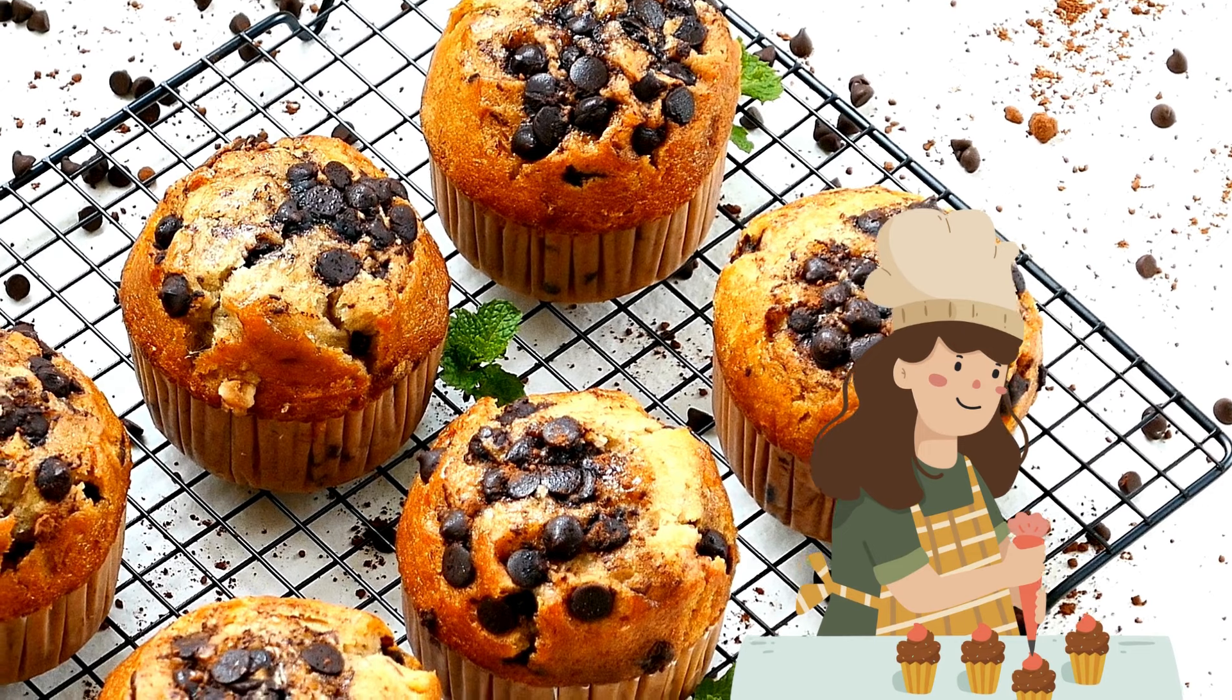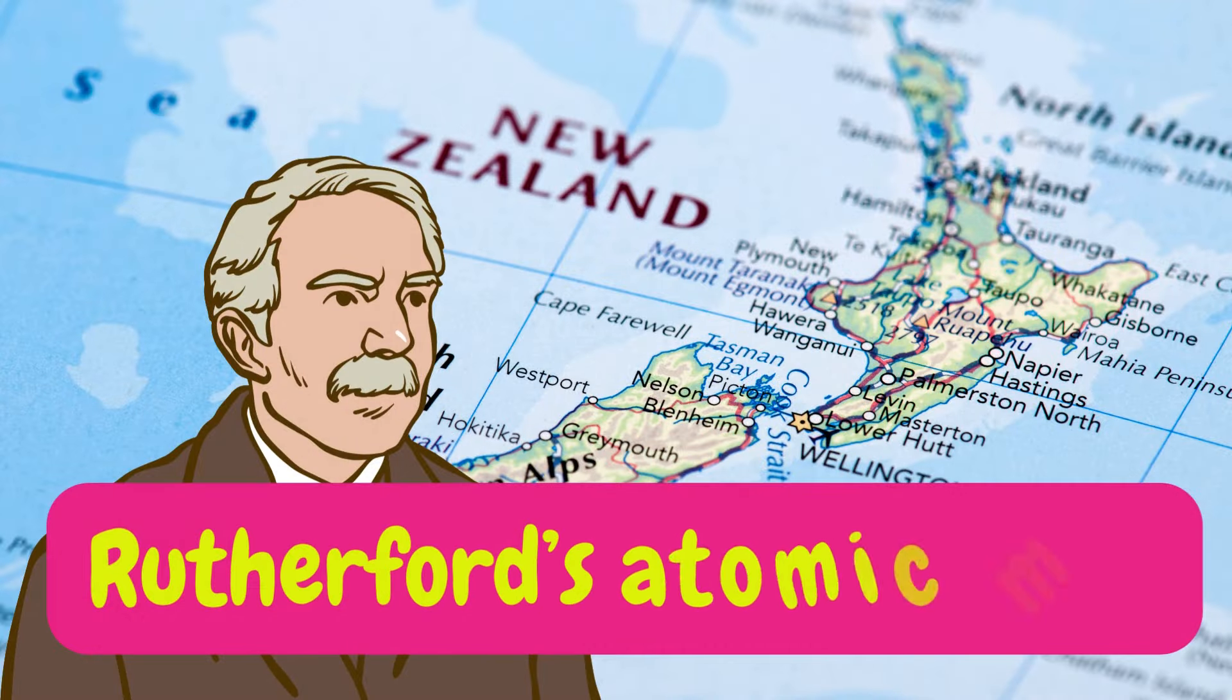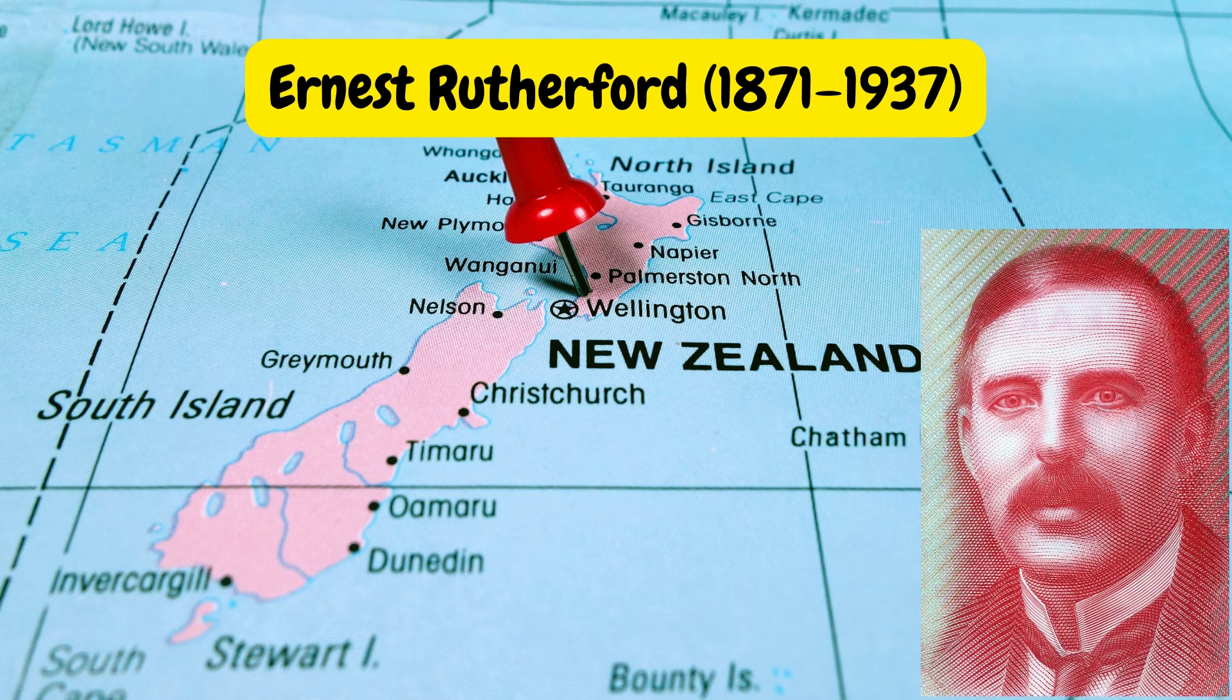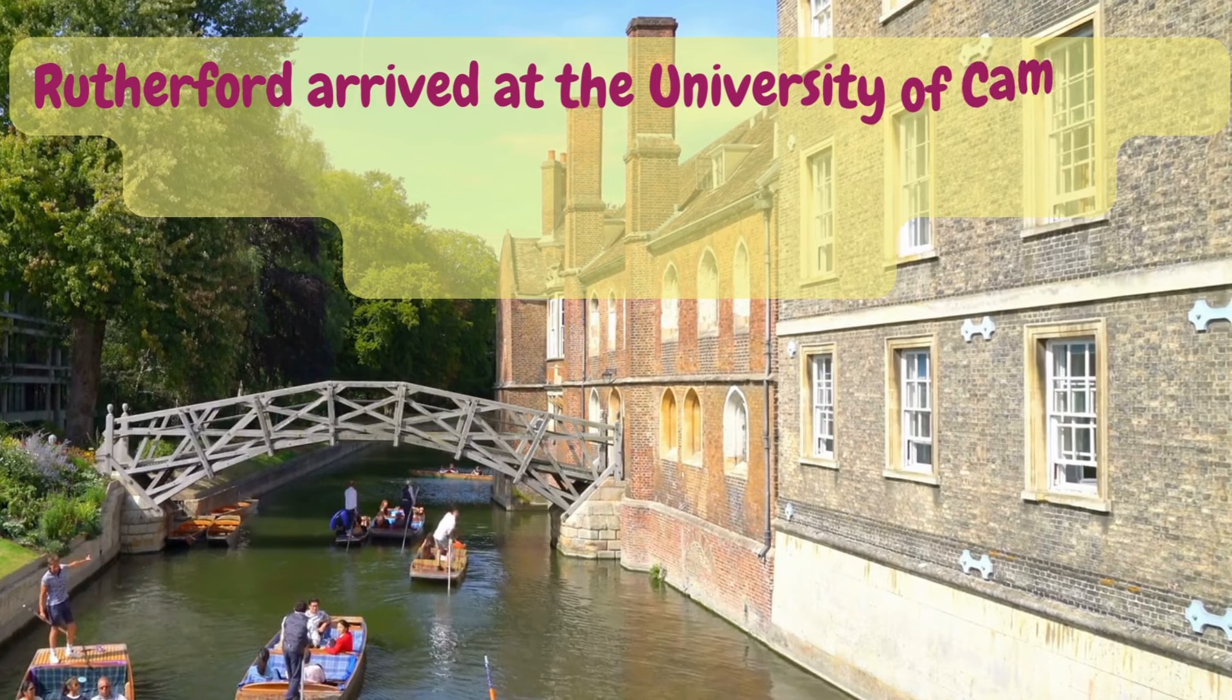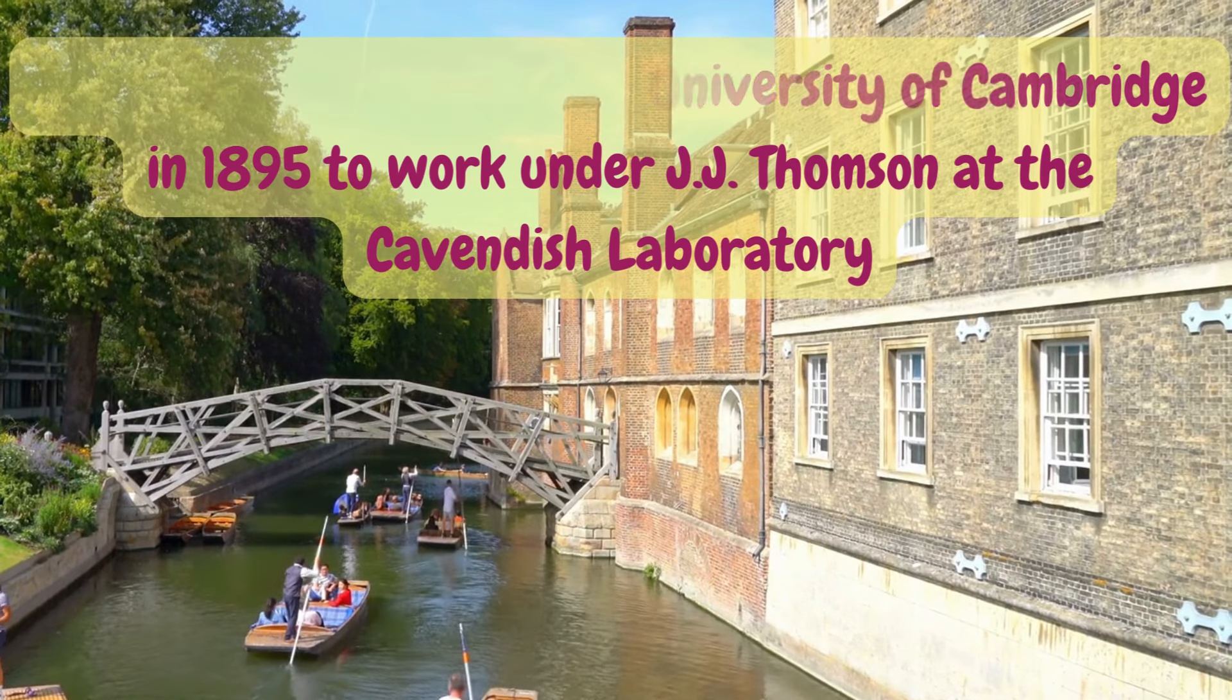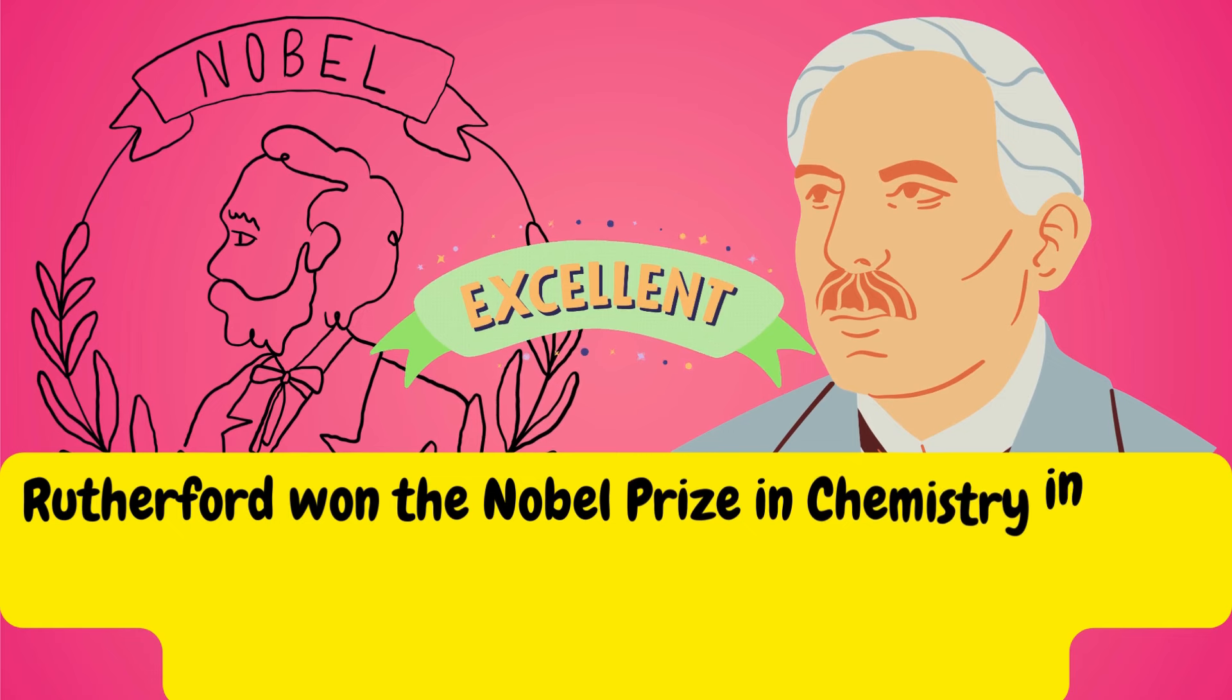Rutherford's atomic model. Ernest Rutherford (1871 to 1937), a New Zealand-born physicist, arrived at the University of Cambridge in 1895 to work under J.J. Thompson at the Cavendish Laboratory. Rutherford was awarded the Nobel Prize in Chemistry in 1908 for his groundbreaking work on radioactivity and his contributions to the study of the disintegration of elements.